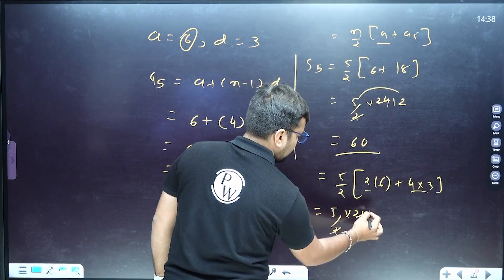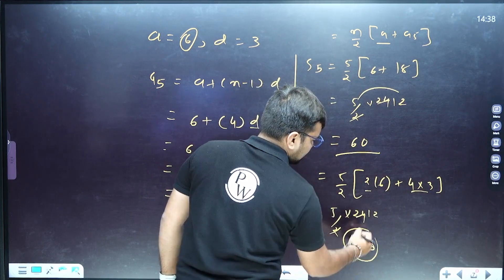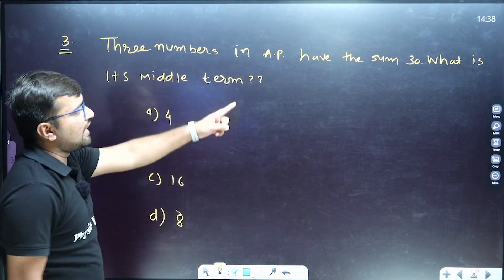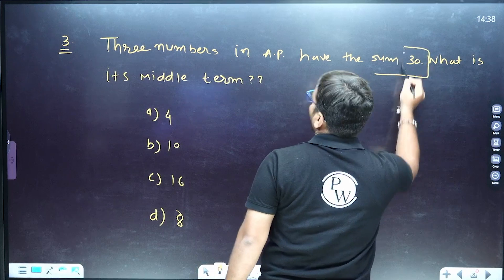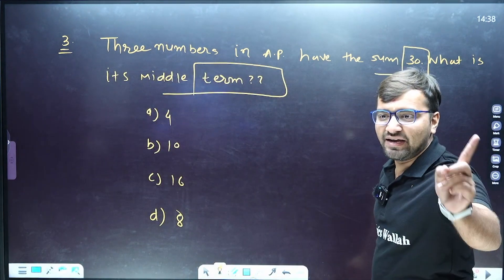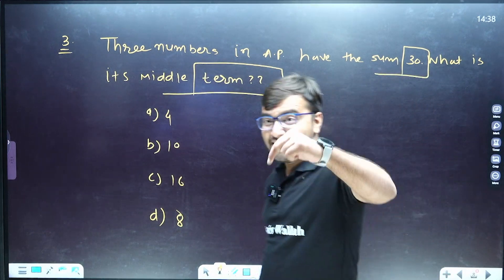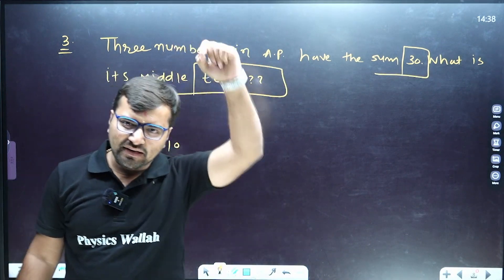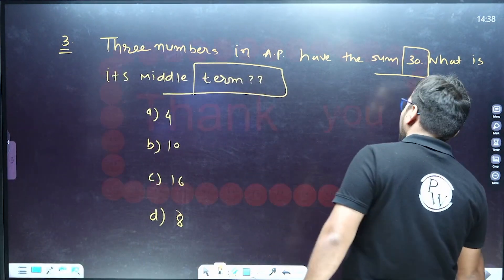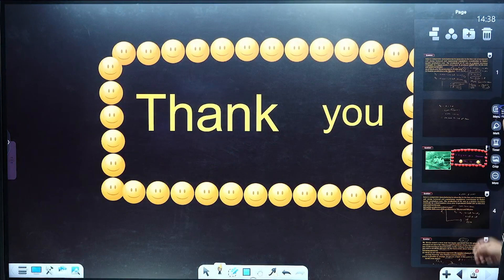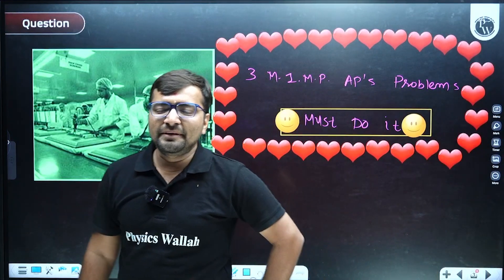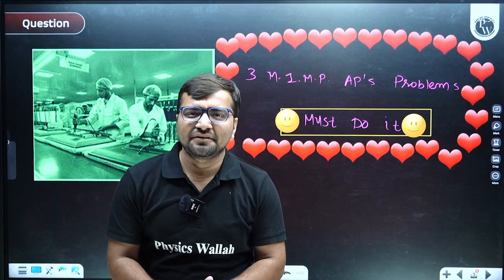For the last question: three numbers in AP have a sum of 30 — what is the middle term? I've already explained this type of question earlier. Try it yourself and write your answer in the comment section. I hope you have understood this entire session very well. We'll meet again in the next session. Thank you!